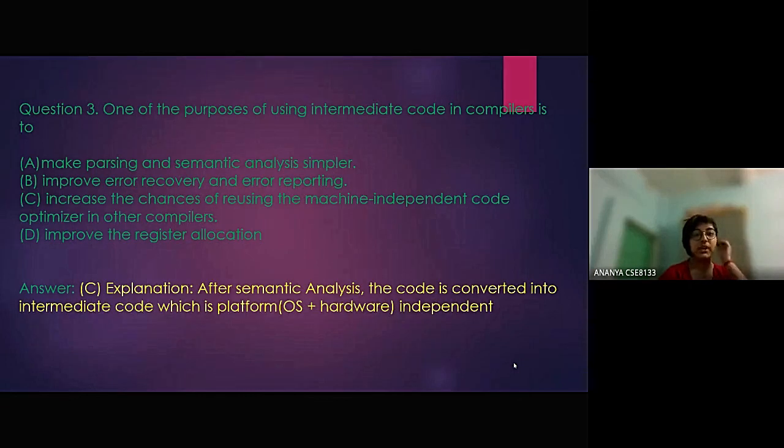Gate question number 3. One of the purposes of using intermediate code in the compilers is to: Option a, make parsing and semantic analysis simpler. Option b, improve error recovery and error reporting. Option c, increase the chances of reusing the machine independent code optimizer in other compilers. Option d, improve the register allocation. Answer is option c.